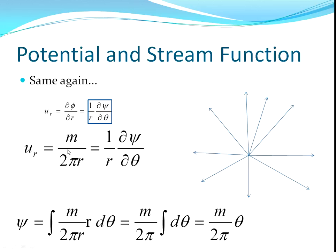Take the r dθ to the other side, integrate both sides, cancel the r's, take out m over 2π as a constant, and then when you integrate dθ, you end up with θ from basic integration. So you're getting the stream function as m over 2π θ.